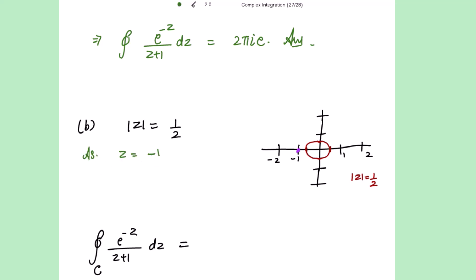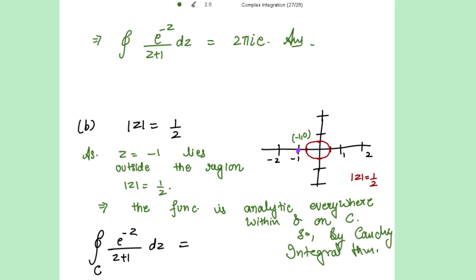Now as z equal to minus 1 in the polar coordinate, it is minus 1 comma 0, lies outside the region mod z equal to 1 by 2, which means the function is analytic everywhere within and on C. So by Cauchy integral theorem, this closed integral e to the power minus z over z plus 1 dz is 0. Function aapka har jaga par ab analytic hai. Koi bhi aisa point is kander nahi hai jaha par function analytic nahi hai. Woh point bahar hai. So the closed integral over this region is simply 0 by Cauchy integral theorem.